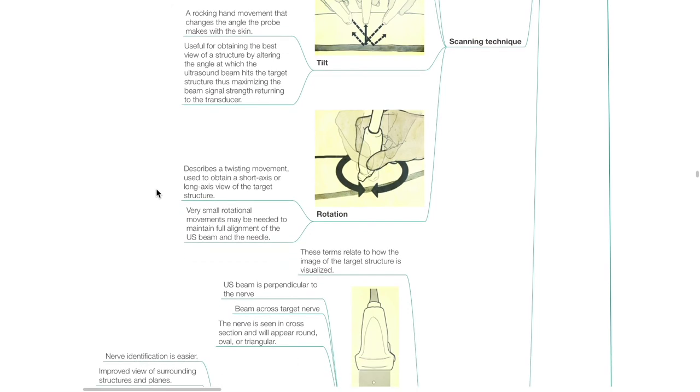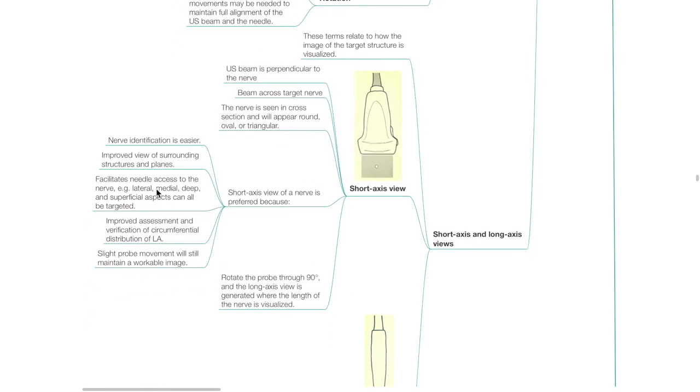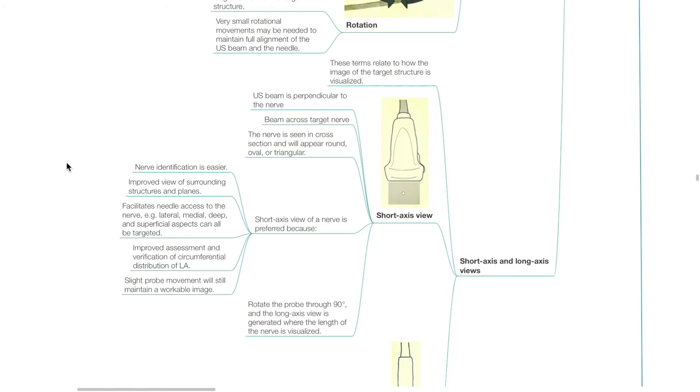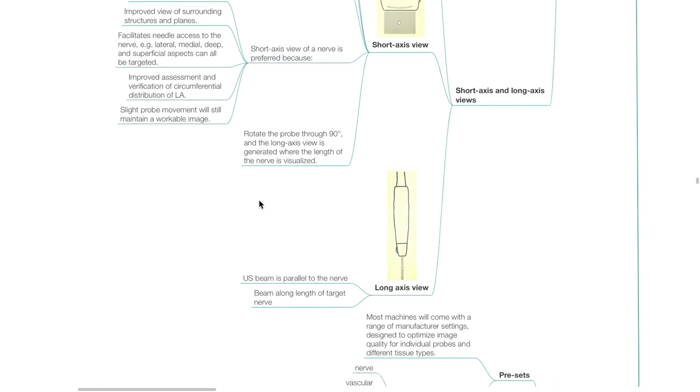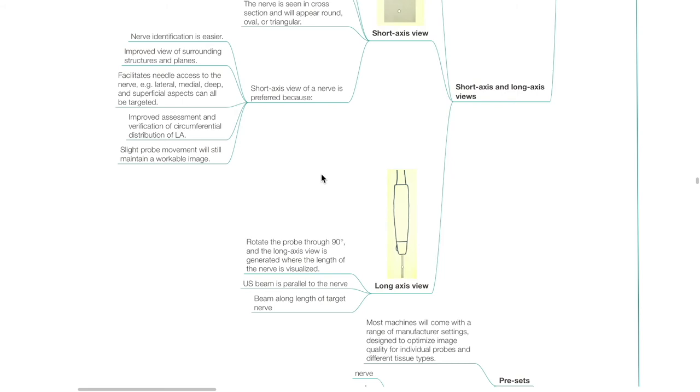Short axis and long axis views relate to how the image of the target structure is visualized. For short axis view, the ultrasound beam is perpendicular to the nerve — the beam is across the target nerve and the nerve is seen in cross section, appearing round, oval, or triangular. The short axis view of a nerve is preferred because nerve identification is easier, there is improved view of surrounding structures and planes facilitating needle access, lateral, medial, deep, and superficial aspects can all be targeted, and there is improved assessment of circumferential distribution of local anesthetic. Rotating the probe through 90 degrees generates the long axis view, where the length of the nerve is visualized and the ultrasound beam is parallel to the nerve.